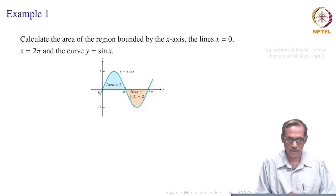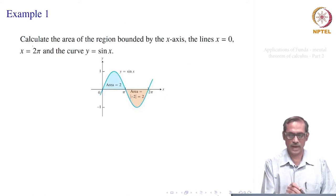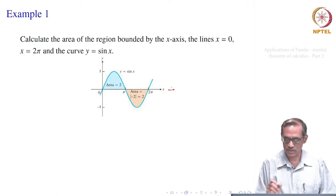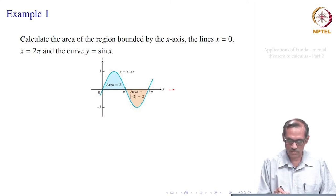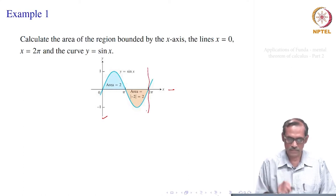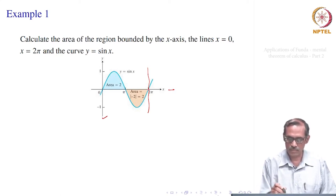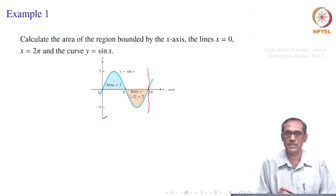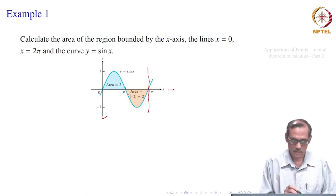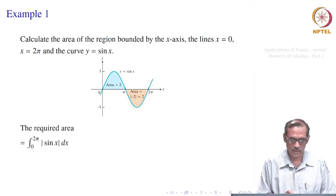In the first example, we are asked to find the area of the region bounded by the x-axis, the lines x = 0 and x = 2π, and the curve y = sin x. We have plotted y = sin x and want to compute the area of this region, which is in blue and yellow — the sum of these two areas. Since we are interested in the area, not the signed area, we write it as the integral from 0 to 2π of |sin x| dx.